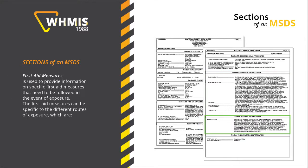The First Aid Measures section is used to provide information on specific first aid measures that need to be followed in the event of exposure. The first aid measures can be specific to the different routes of exposure, which are inhalation, skin contact, eye contact, and ingestion.